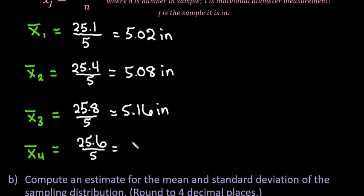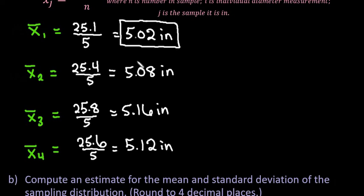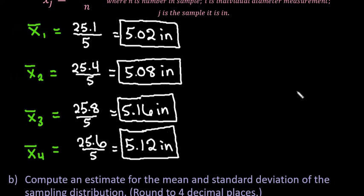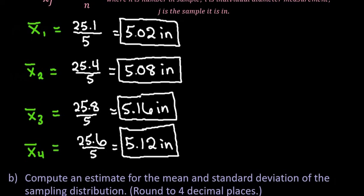When computing an estimate for the sample mean and sample standard deviation of a sampling distribution, you must first find the individual sample means. You can't simply find the mean and standard deviation of all individual observations by adding them all together. You actually have to find the individual means for each sample first, and then the estimate is the mean of all of the sample means.